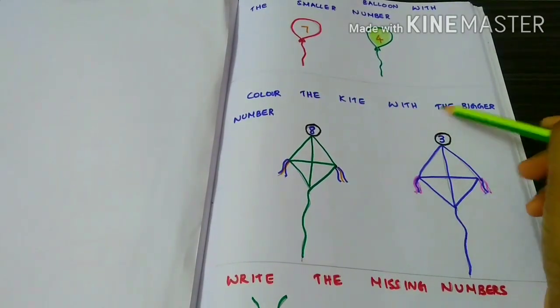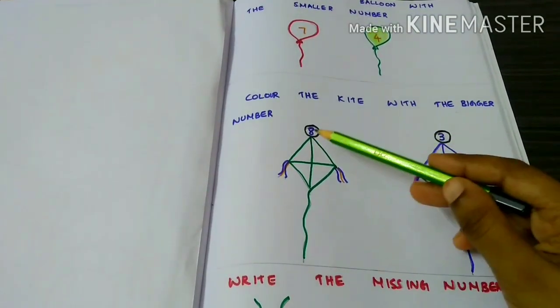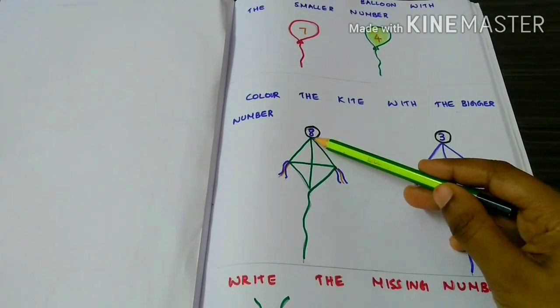Color the kite with the bigger number. 8, 3. 8 is the bigger number so we have to color the kite.